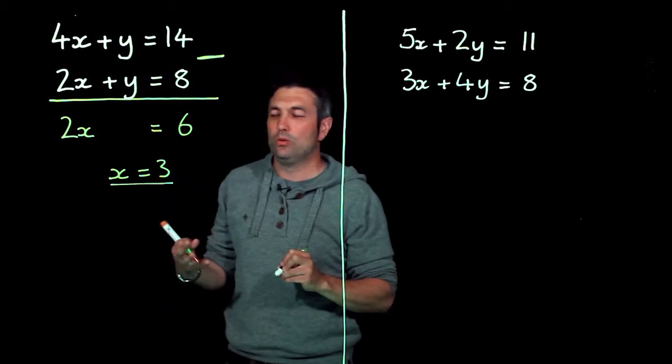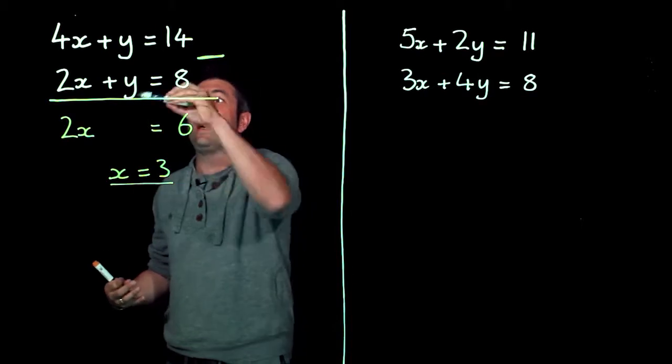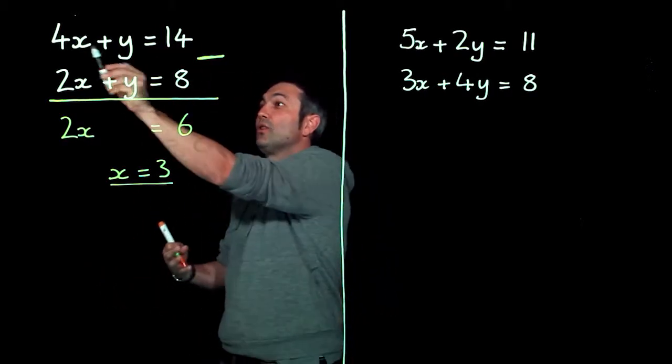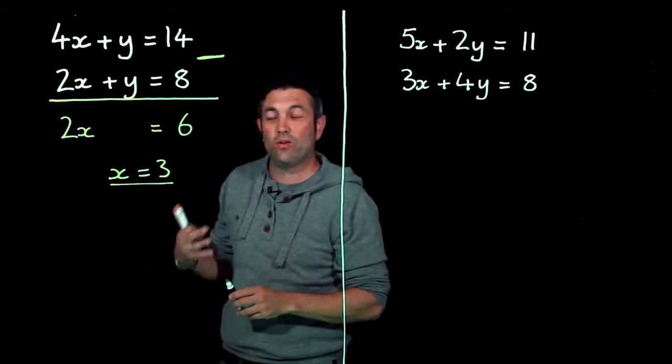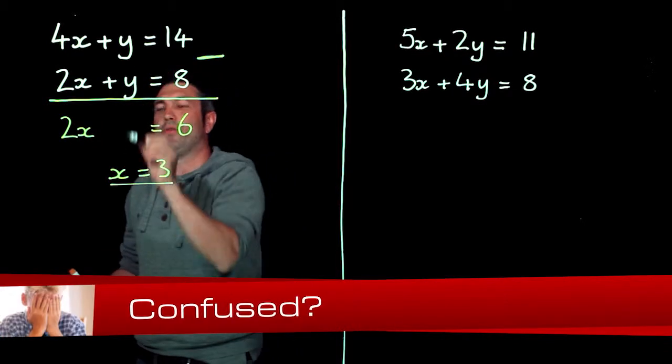Now where a lot of people lose marks in these questions is they find that one answer and they forget to go back and find the other answer. Simultaneous equations, if there are two letters, you want to find the value of both of them. So if x is 3, I'm going to find out what y is.